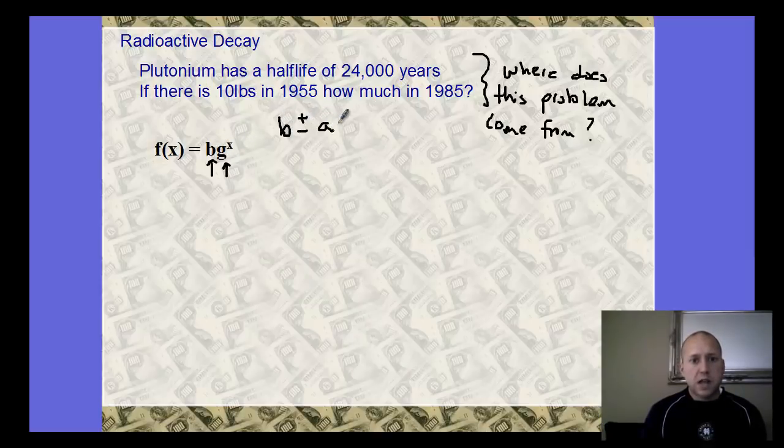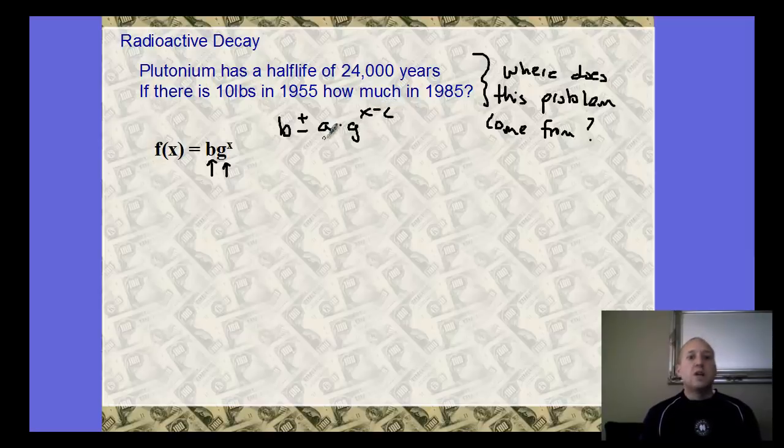You may prefer it written like this: b plus or minus a times g to the x. Maybe another way of writing that so you can see what's happening. Or you can do x minus c if you want to see the transformations. With that, the a value you can now see, it's actually the number in front of our base, which is different than what we were talking on the previous slides. But it doesn't matter the variable you use, it matters where it's at in the expression.